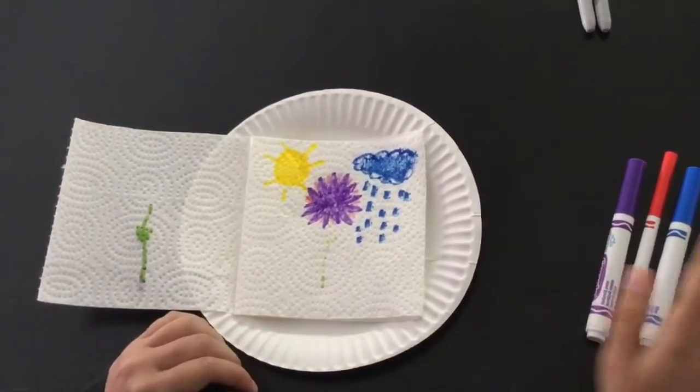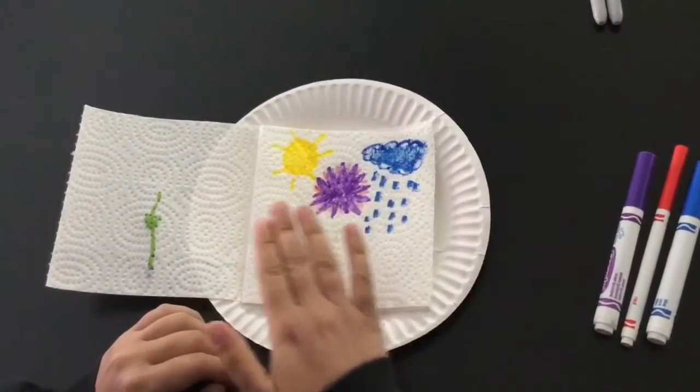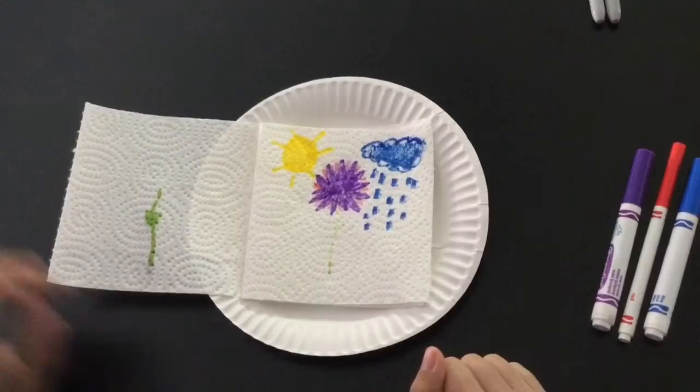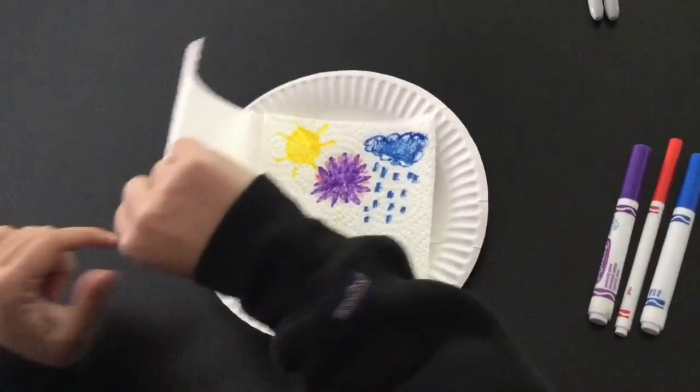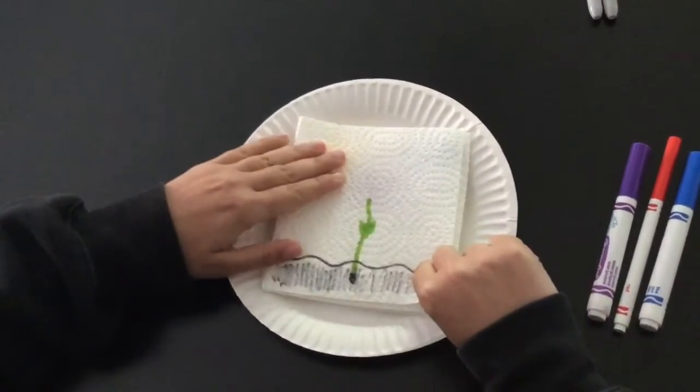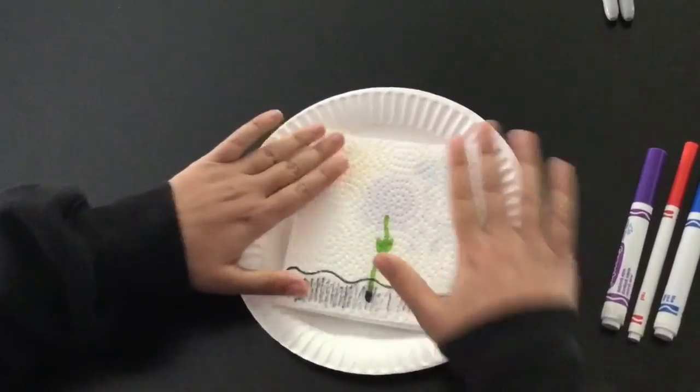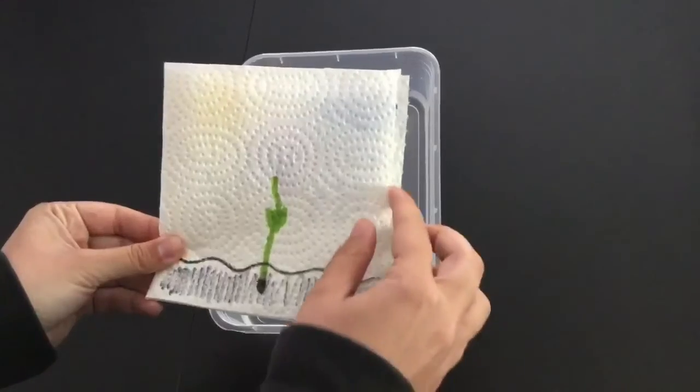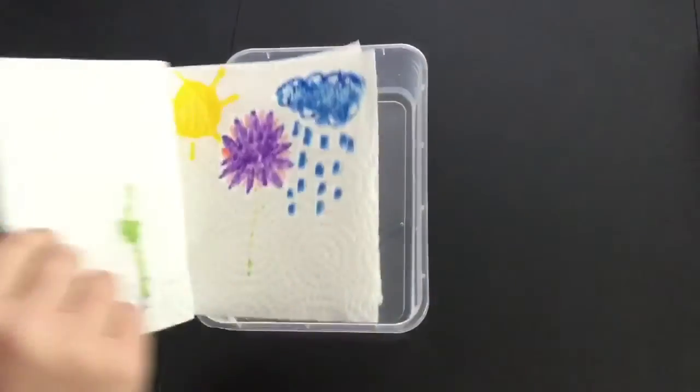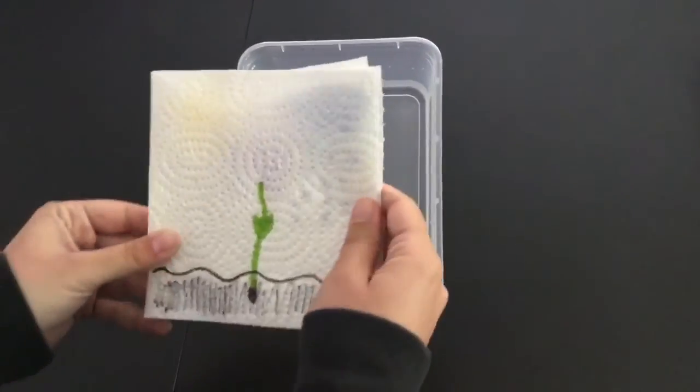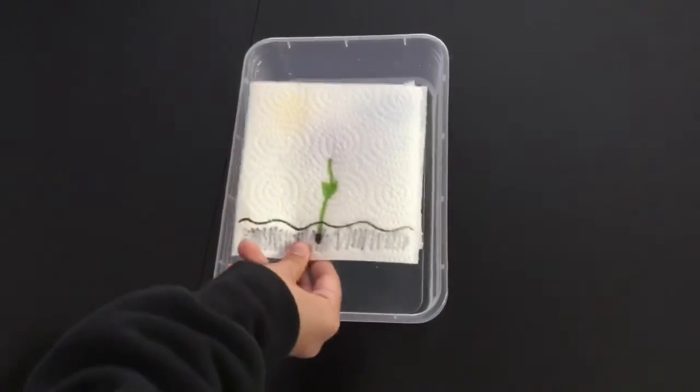And once you're finished drawing rain, sun, and the rest of your flower, you can put the napkin back on top. And the last step is to take your paper towels with the top and then the inside and you're going to place it into the water.